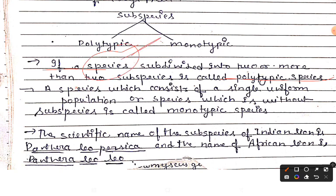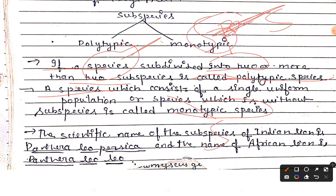Polytypic species refers to when a species has sub-species. Monotypic is the condition when a single uniform population remains in the species — there are no sub-species. When species are separated because of physical barriers, the phenotypic characters change and we call these sub-species. When species are not separated by any physical barrier, we call it monotypic species.